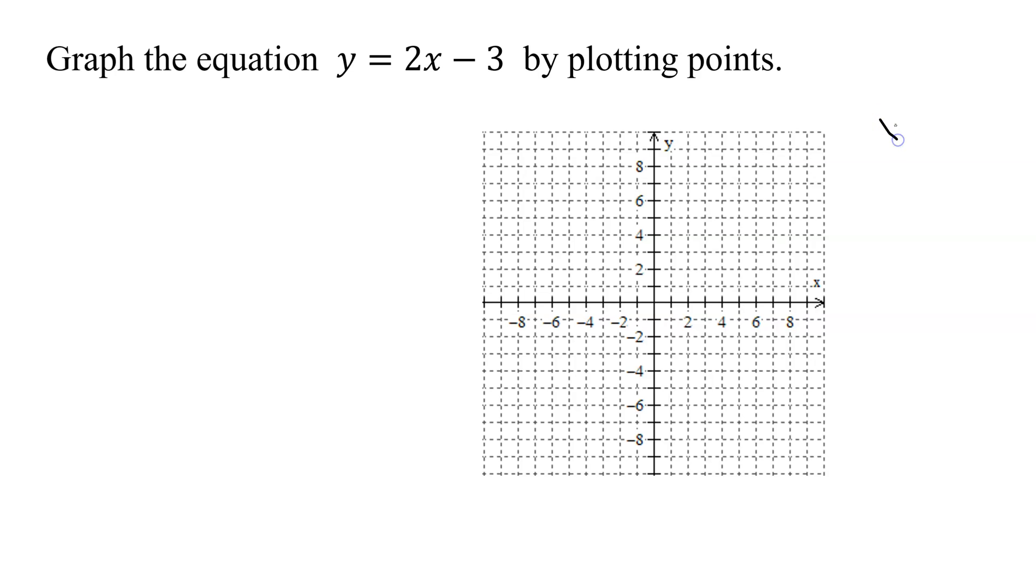So I need to write out a t-chart. I'm going to have to find some points. And does it tell you which x values to use? No. I normally start with x equals 0 because that's a very easy one to figure out the y value. So when x equals 0, y equals 2 times x, so it's 2 times 0 minus 3. So what's the y value? 2 times 0 is 0, 0 minus 3 is just negative 3. So my first ordered pair is 0, negative 3.